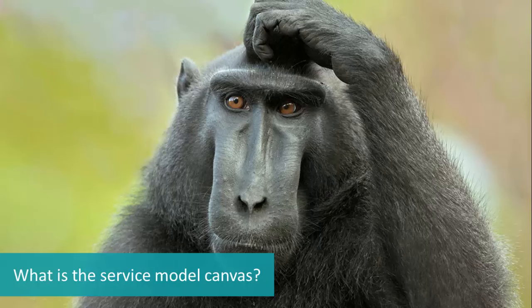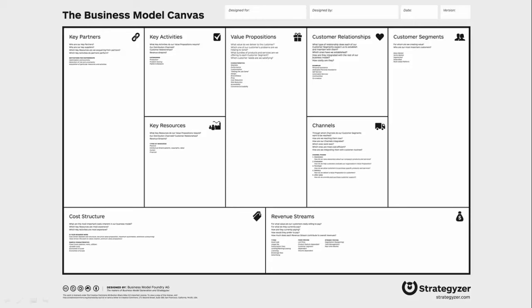So what is the service model canvas? It's something I've created, loosely based on things like the business model canvas and the lean canvas. The business model canvas has been around for a while and it's a useful way of documenting and thinking about either new or existing business models — useful for a startup or even for an existing business model, thinking about some of the key elements.